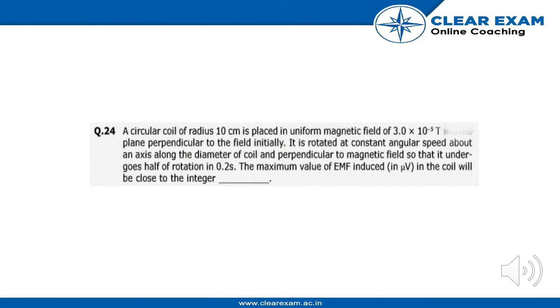It is rotated at a constant angular speed about an axis along the diameter of the coil and perpendicular to the magnetic field so that it undergoes half a rotation in 0.2 seconds. The maximum value of the emf induced in microvolts in the coil will be close to the integer.